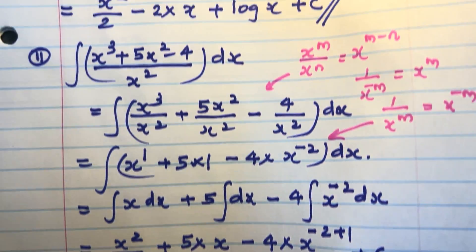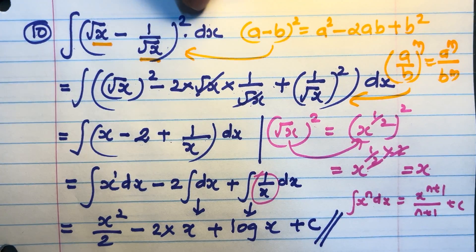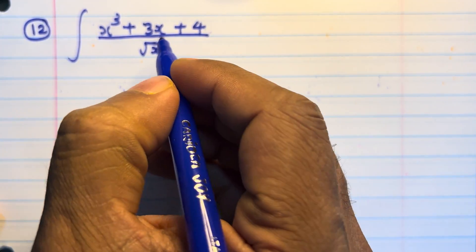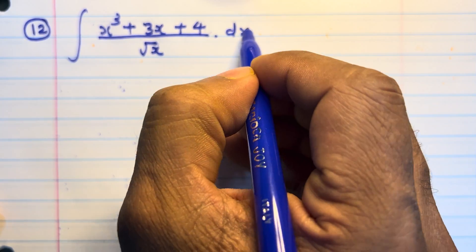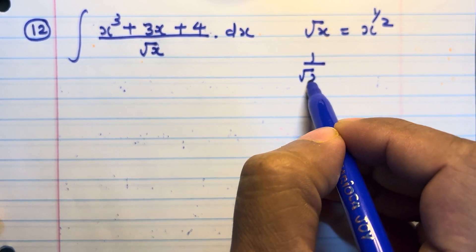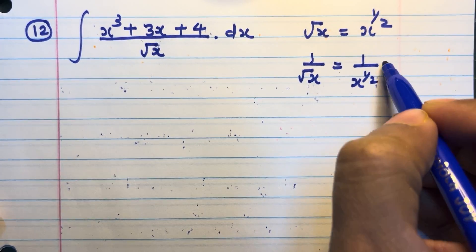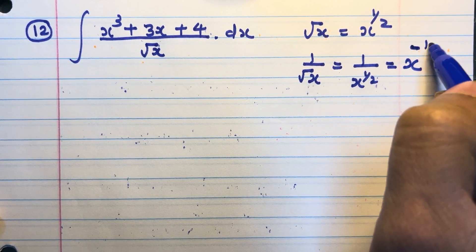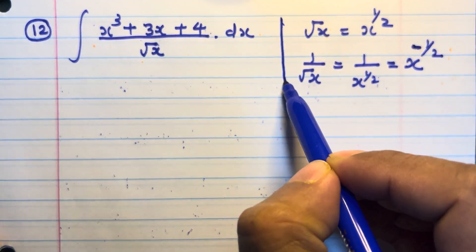Question number 12. Integral of (x³ + 3x + 4)/√x dx. What is √x? Root x is x^(1/2), so 1/√x = 1/x^(1/2). Taking it to the numerator, the exponent becomes negative: x^(−1/2). So we will multiply each term by x^(−1/2).